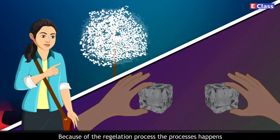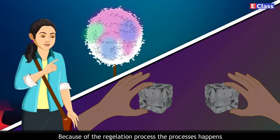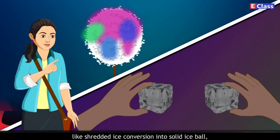Answer: Because of the regulation process, the processes happen like shredded ice conversion into solid ice ball. Small pieces of ice stick to each other when they are pressed against each other for a while.